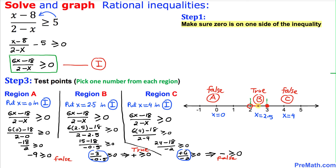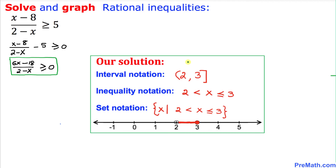Our only true region is Region B, so we shade only that region as our solution. In interval notation, since 2 is not included we use a parenthesis and since 3 is included we use a bracket: the solution is (2, 3]. The solution is written in interval notation, inequality notation, and set notation. Here is our graph as well. Thanks for watching and please don't forget to subscribe to my channel for more exciting videos!